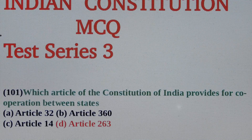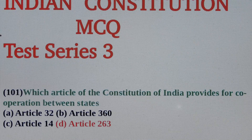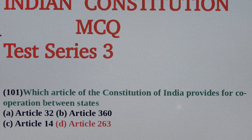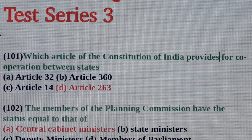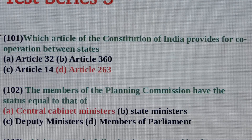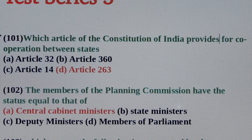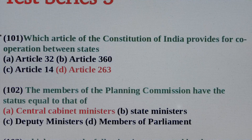Question No. 101: Which article of the constitution of India provides for cooperation between states? Answer is Option D: Article 263. Question No. 102: The members of the planning commission have the status equal to that of? Answer is Option A: Central cabinet ministers.